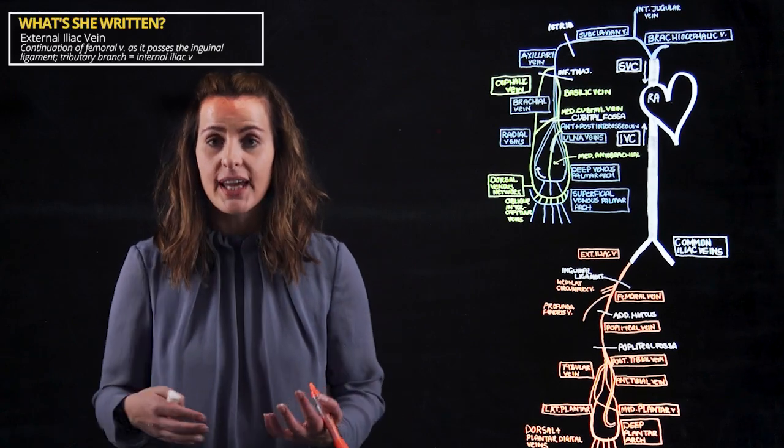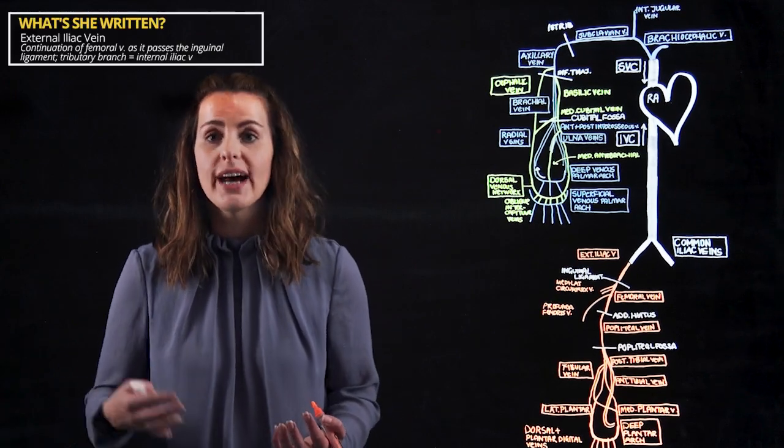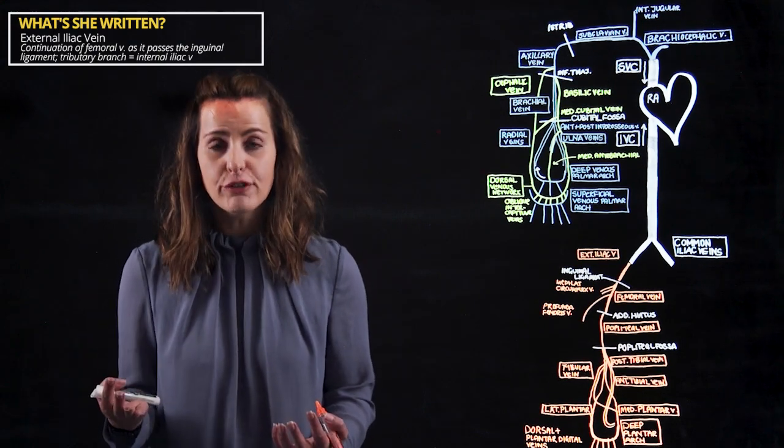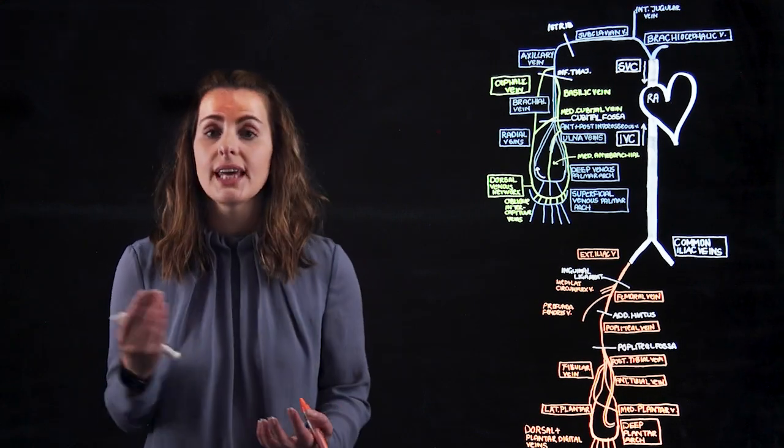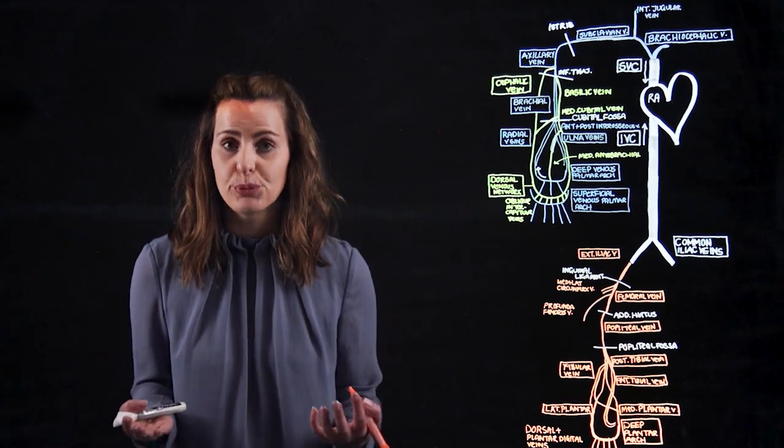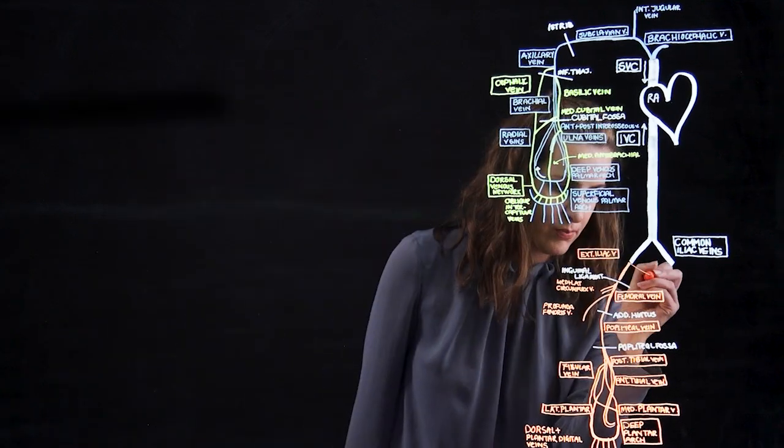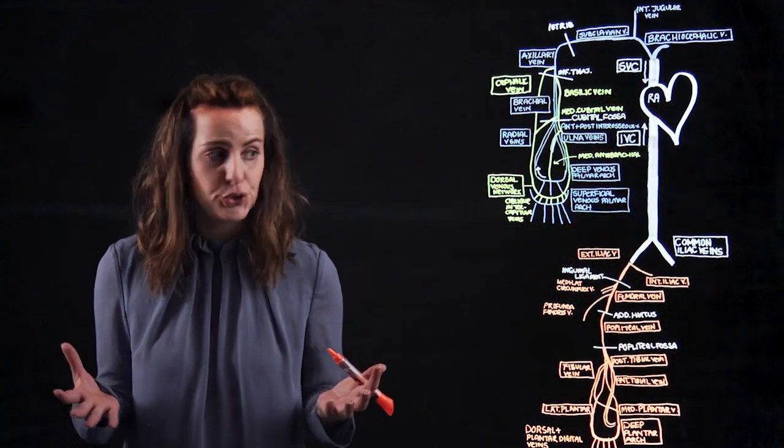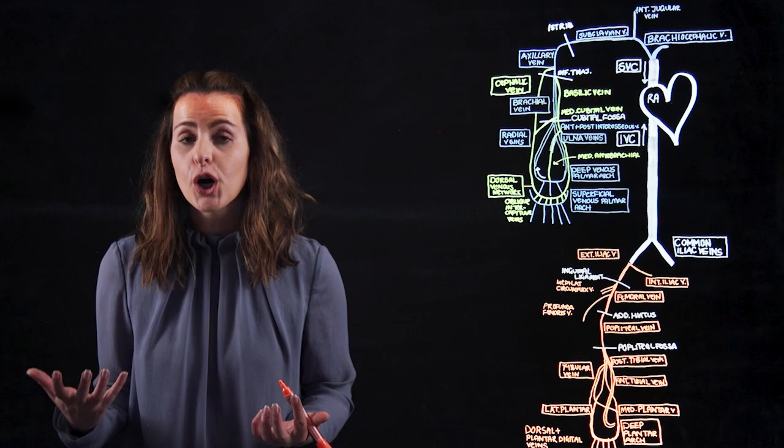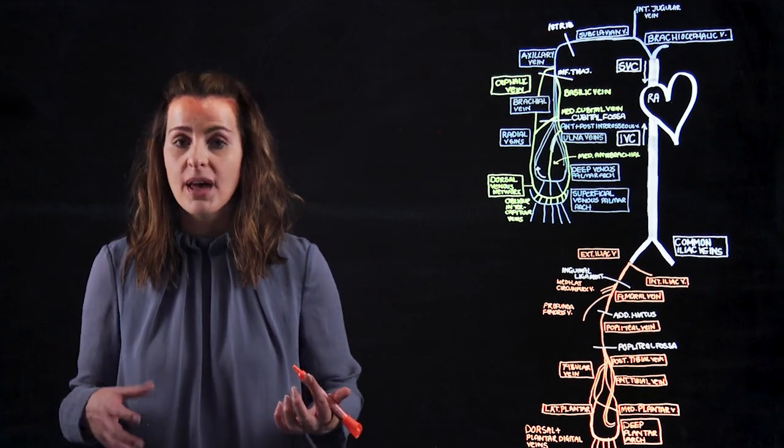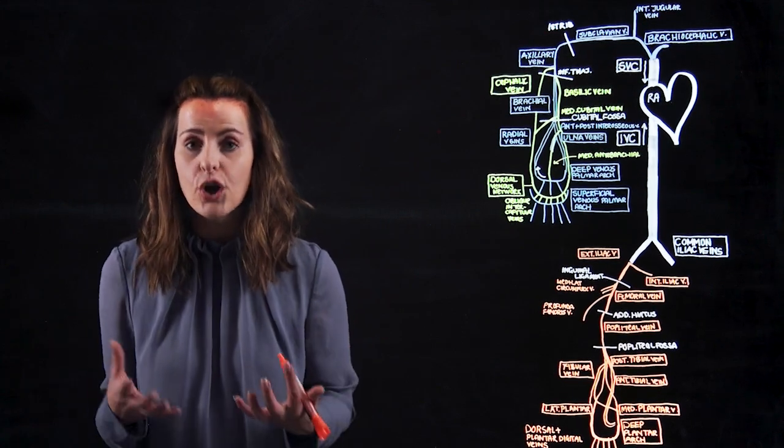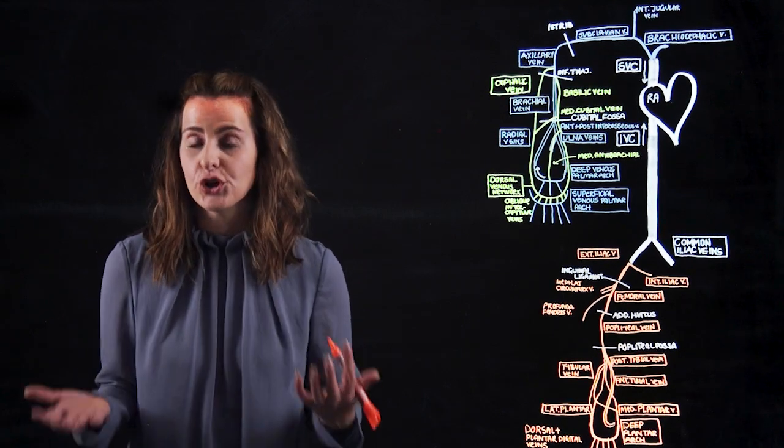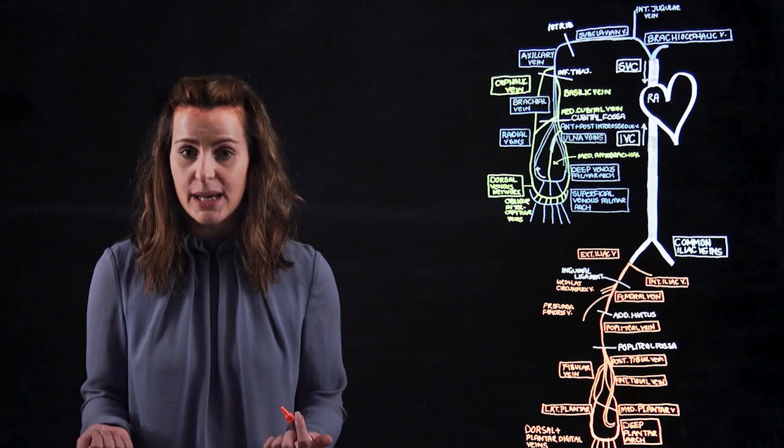Our external iliac vein is then going to continue as the common iliac vein as it courses over that iliac fossa and receives the internal iliac vein as a tributary branch. You should be able to recall that the internal iliac vein is going to drain blood from the internal organs of the pelvis, the pelvic viscera, as well as the external genitalia and the perineum.